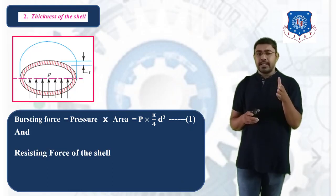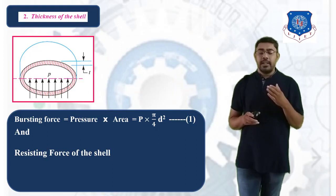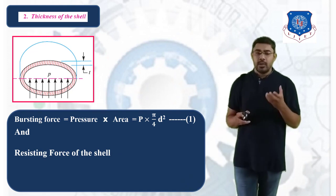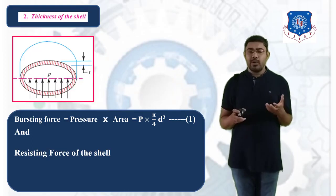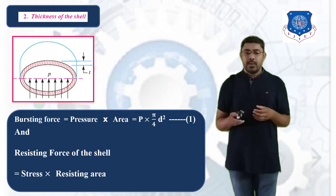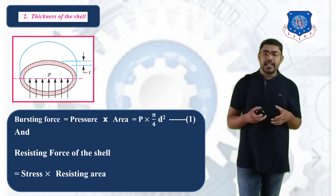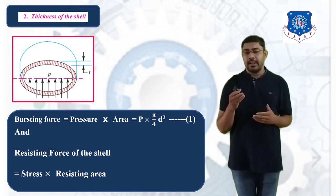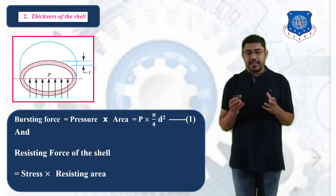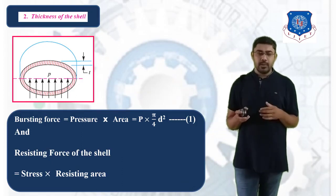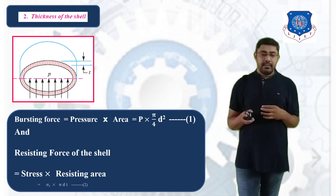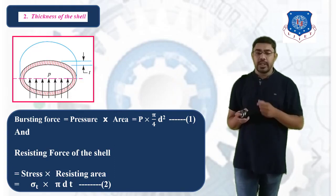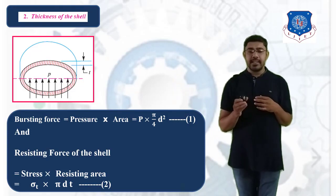The resisting area in this spherical cell is the hoop (circumferential) area. To calculate the resisting force when we apply pressure P on the spherical cell: resisting force = stress × resisting area. Here the permissible stress is sigma T, and the resisting area is π·D·T. So resisting force = sigma T × π × D × T. This is the resisting force, giving equation number 2.